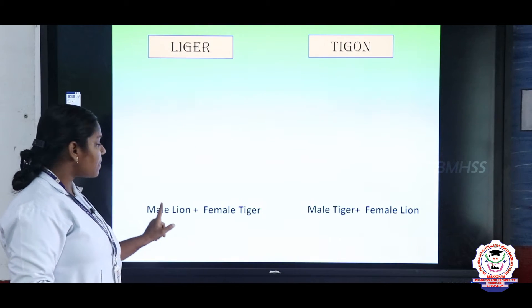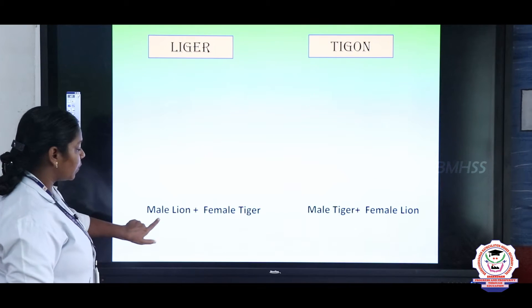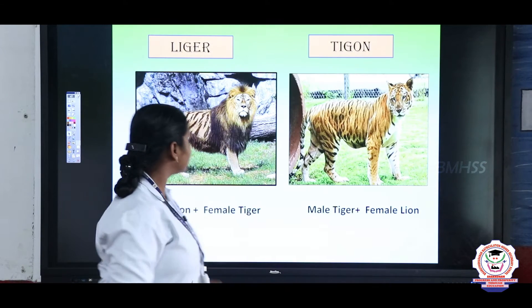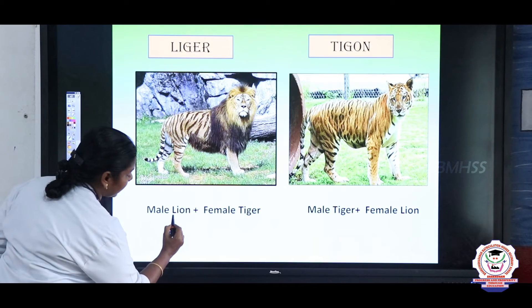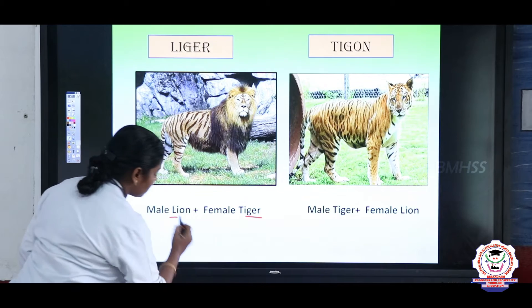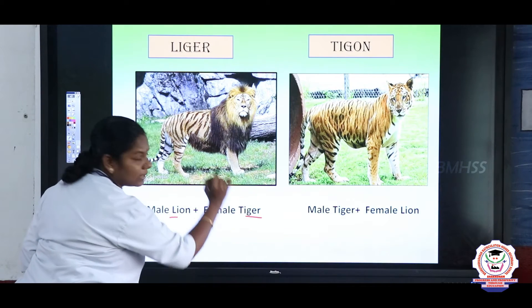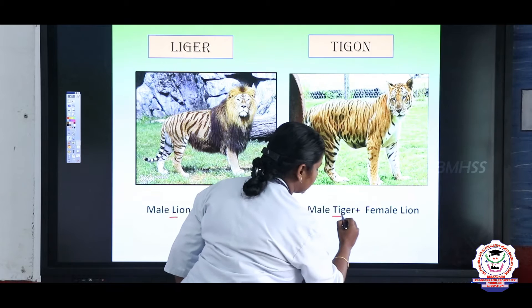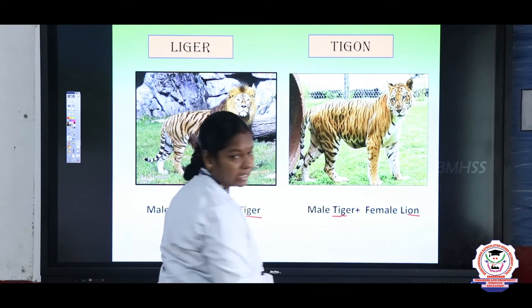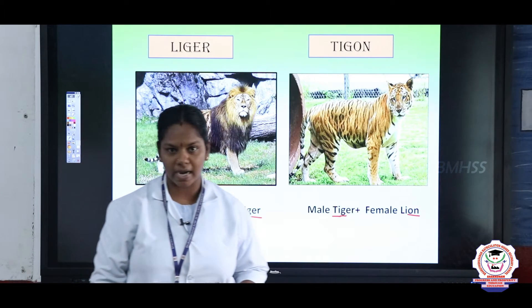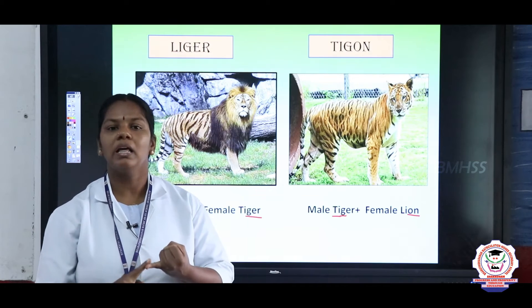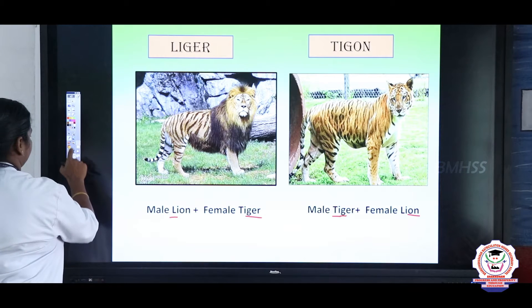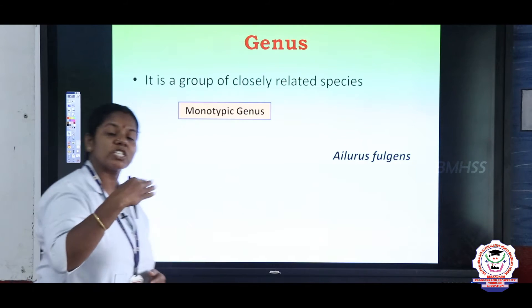Let us see some other sterile organisms. Male lion plus female tiger gives us a liger. Male tiger plus female lion gives us a tigon. It is easy to remember: when the male name comes first, you get liger; when the female name comes first, you get tigon. So the sterile organisms we studied are mule, hinny, liger, and tigon.